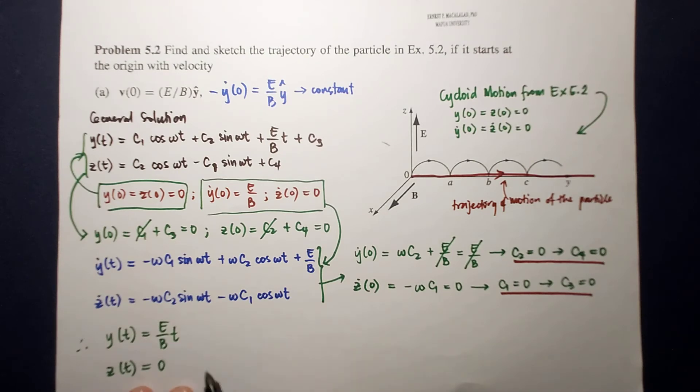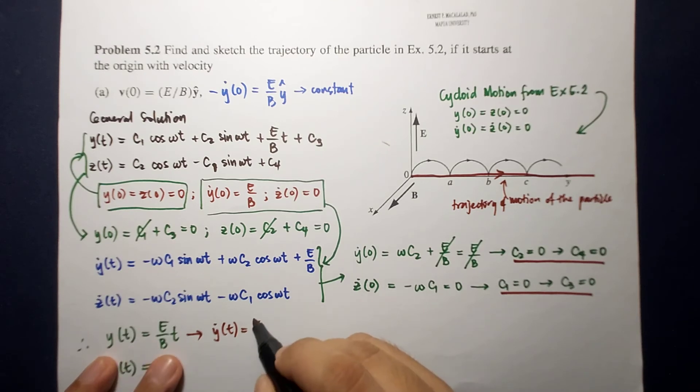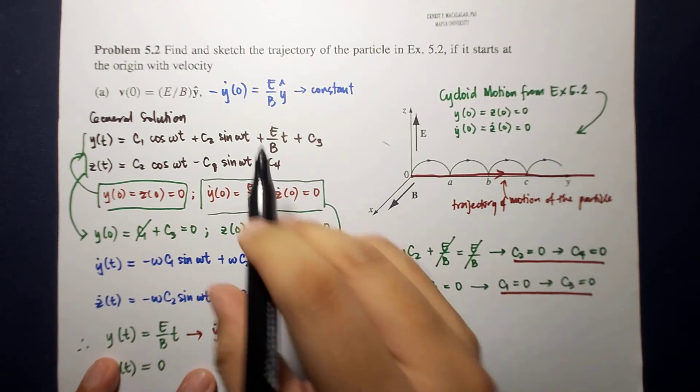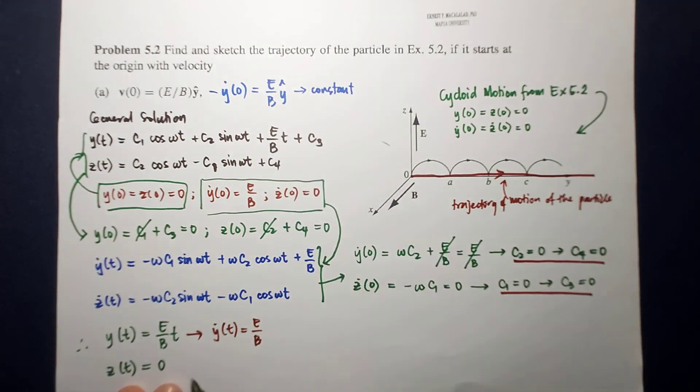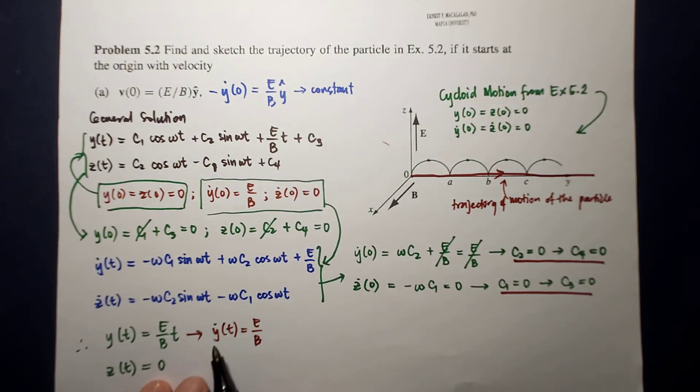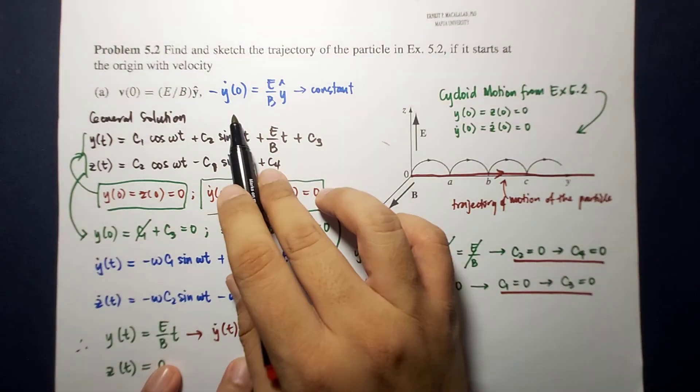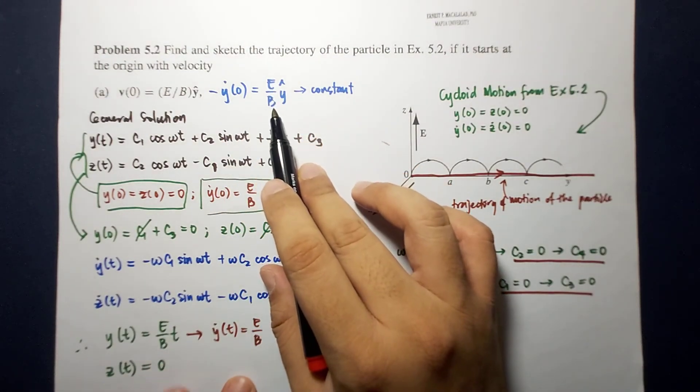So, you will notice that the particle moves in a straight line. If we're going to take the time derivative of this, the time derivative is equal to e over b, which is what we got earlier. Because the position of the particle along y varies linearly with time, the particle's velocity along that direction is a constant in time. So, if at any given point in time, the particle's velocity along y is e over b, therefore, initially, it should also be e over b. So, you have a consistent solution.